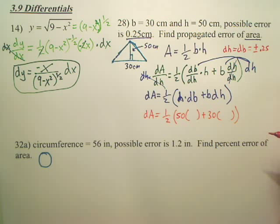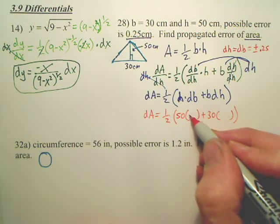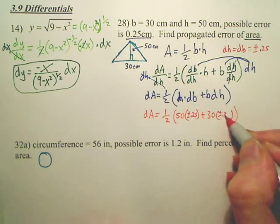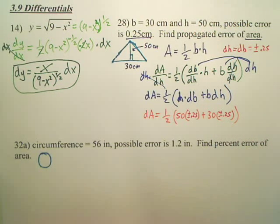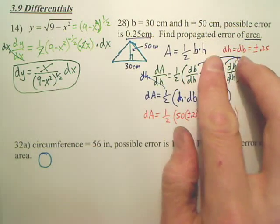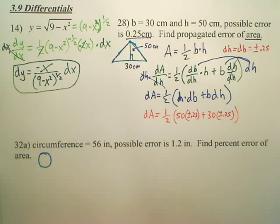Are you okay with that? For both of them, it could be off positive 0.25 or negative 0.25. So, are you okay that I put in here positive or negative 0.25 for both of these? You guys okay with that? My dB, my dH, my change in height and base, could both be off by a quarter centimeter.